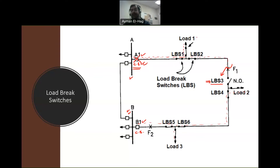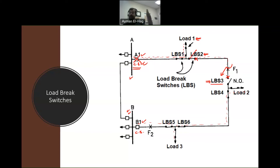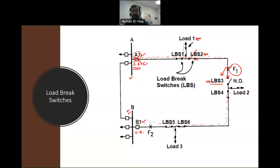Once A1 opens, the fault at F1 has no power from either side, so it stops. But now load 1 has no power. To restore power while isolating the fault, we open the normally closed LBS2, isolating the fault from both sides. Then we close circuit breaker A1 again. Since LBS1 is still closed, load 1 gets power restored. The fault section remains de-energized so we can clear it. After repair, we close LBS2 again.